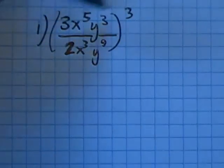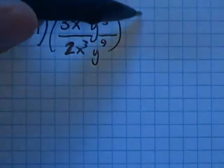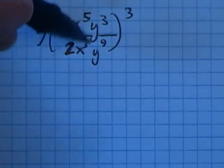So there's a couple things I could do here. I could distribute that 3 in first, or I could simplify first, and then distribute that 3, that cube in. I think I'll do that simplifying first.